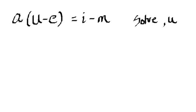Now what we're going to do here is I'm going to multiply this a across. So this becomes, we're going to distribute the a. So this is a times u minus a times e is equal to i minus m.